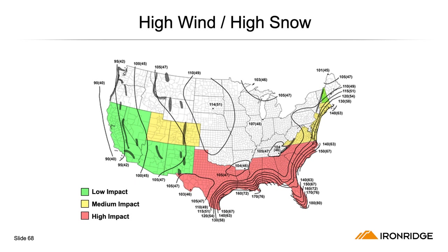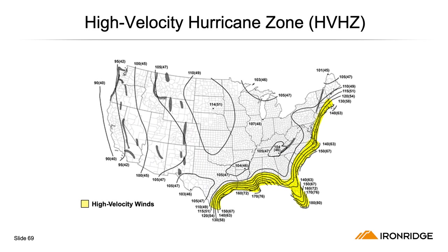In high-snow load areas like New Hampshire, where installers are already choosing XR100, there shouldn't be much of an impact. In extreme environments like hurricane-prone Miami, the new code will have the most impact. However, IronRidge is a high-velocity, hurricane-zone-approved solar system. Check with your local AHJ to better understand the specific changes to make to your solar designs.